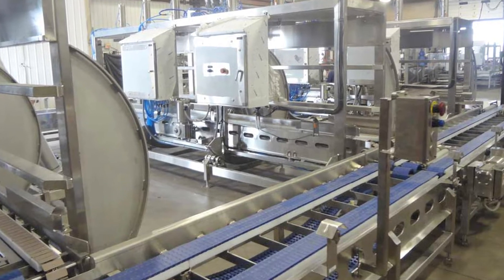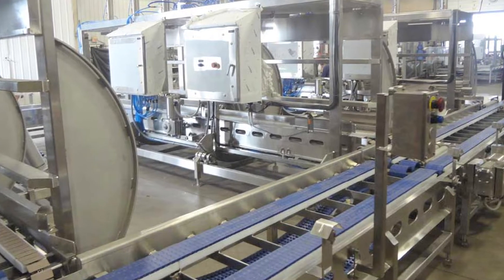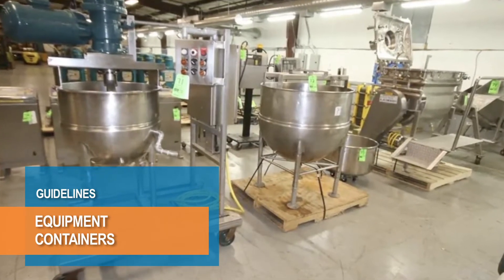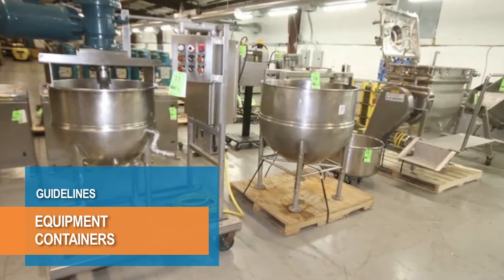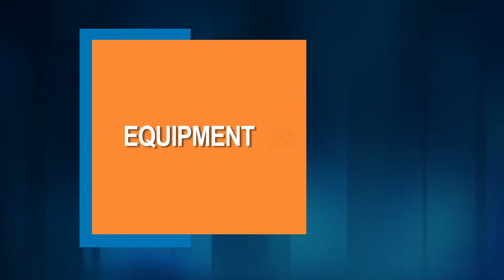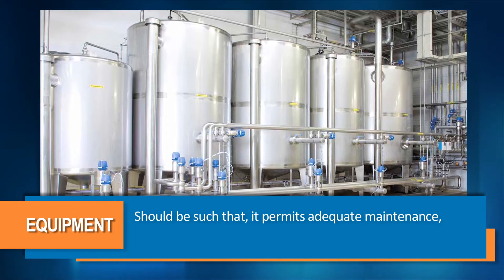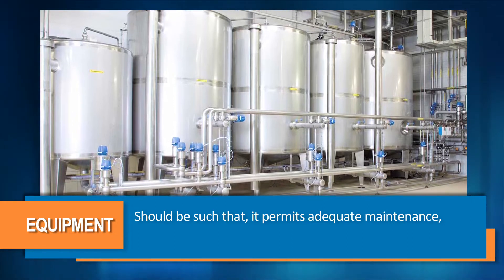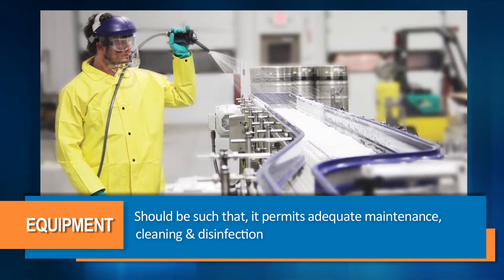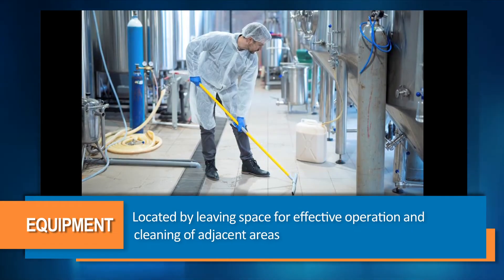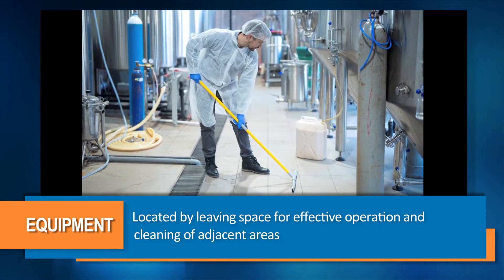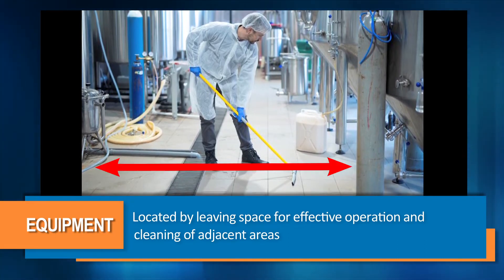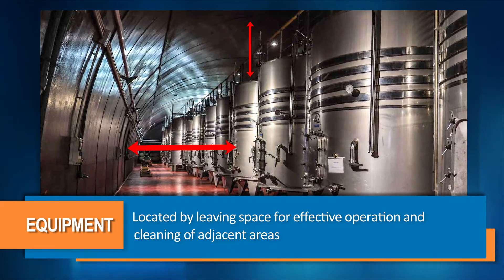In this video you will learn about the design and material requirements of equipment including machines and containers used in food manufacturing. The design and construction of the equipment should be such that it permits adequate maintenance, cleaning and disinfection. It shall be located by leaving space for effective operation and cleaning of adjacent areas like floors, walls, ceilings and other surfaces.